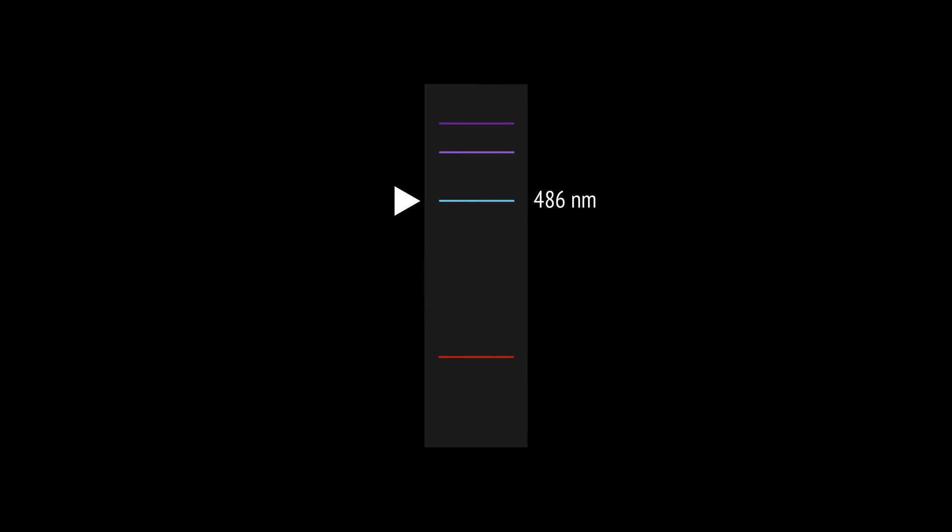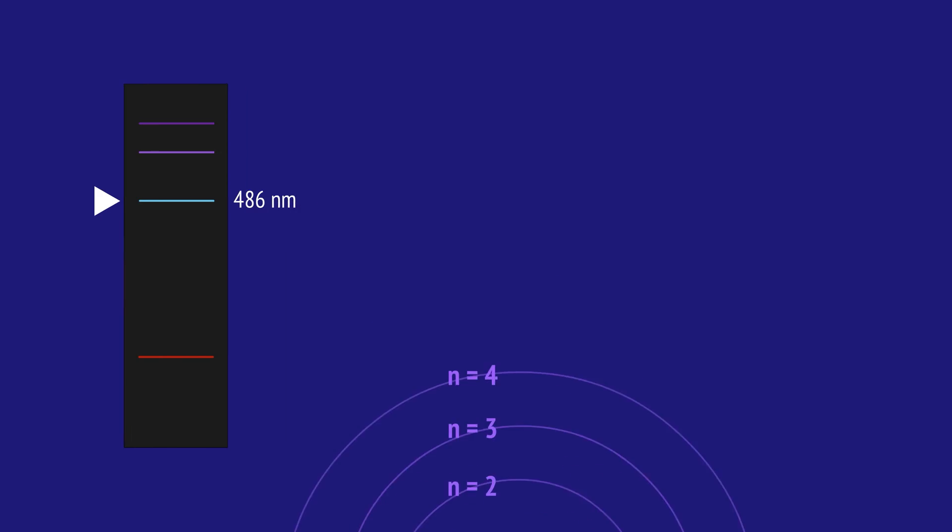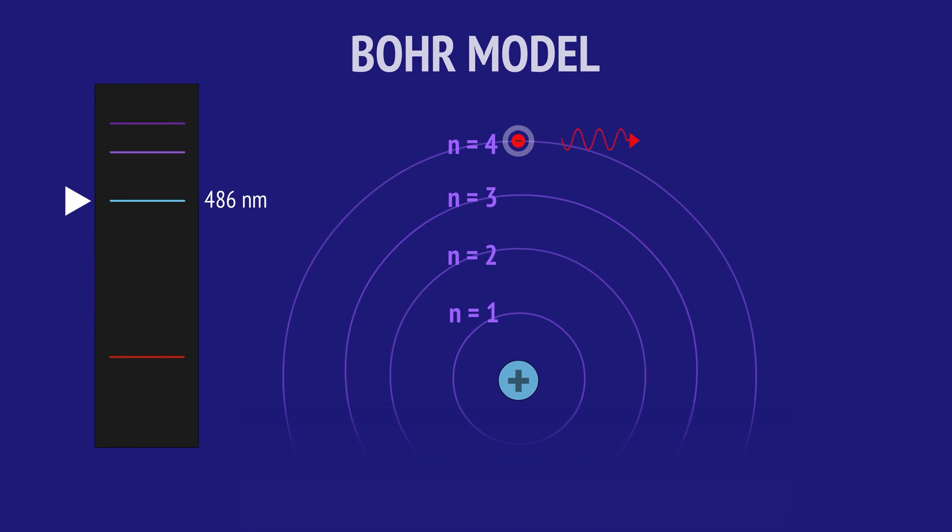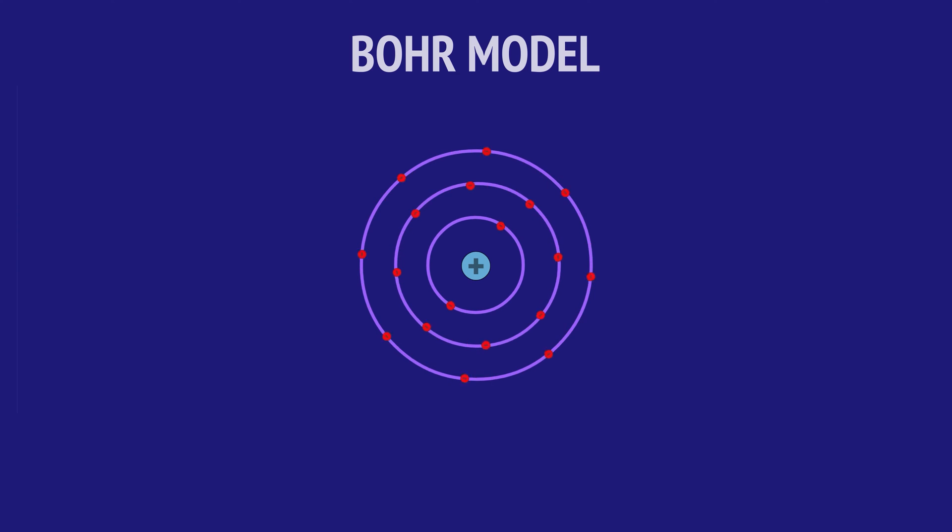Bohr's calculations showed that these wavelengths correspond to the precise amount of energy a hydrogen electron would release when falling from an excited state back to its ground-level energy. As a result of these experiments,